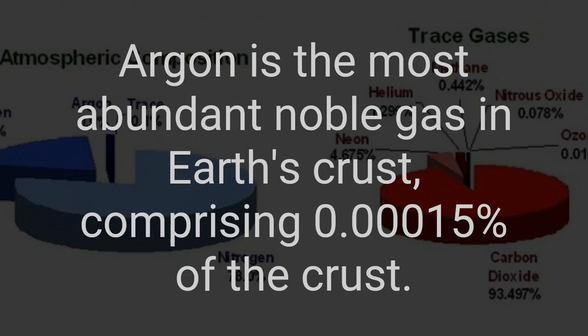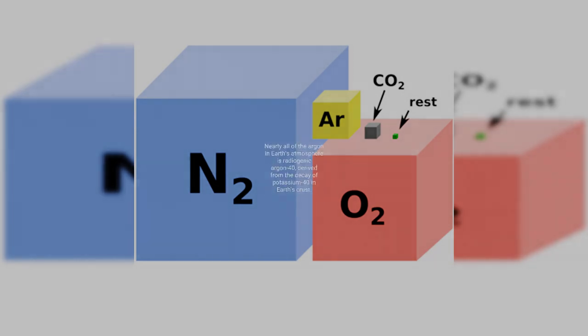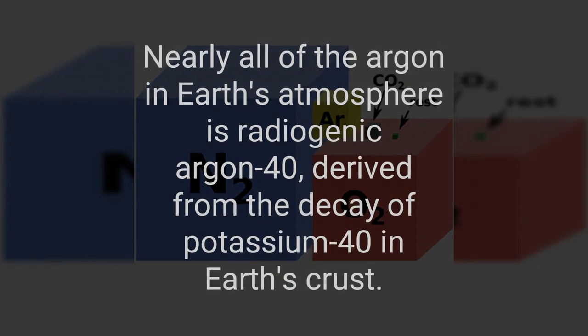Argon is the most abundant noble gas in Earth's crust, comprising 0.00015% of the crust. Nearly all of the argon in Earth's atmosphere is radiogenic argon-40, derived from the decay of potassium-40 in Earth's crust.